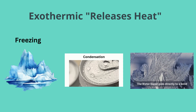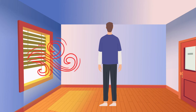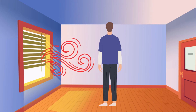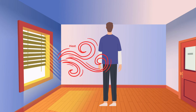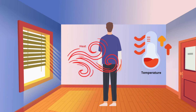A helpful way to remember the difference is as follows. Imagine you're sitting in a room with a window. Endothermic sounds like "into," so warm air will flow into the room. As the warm air flows into the room, your temperature will increase.